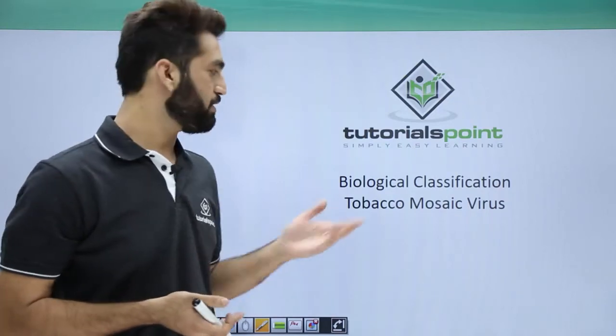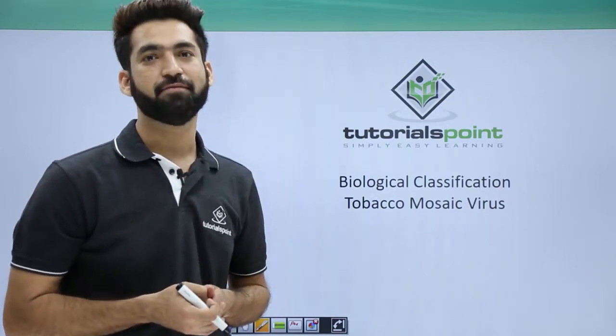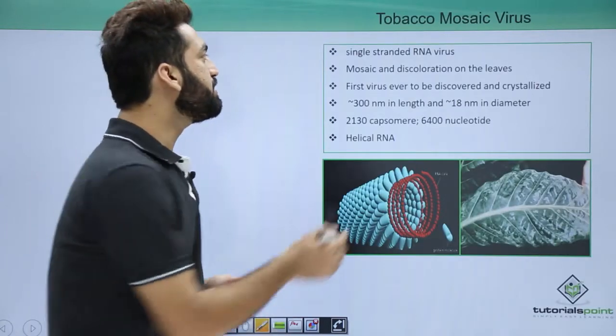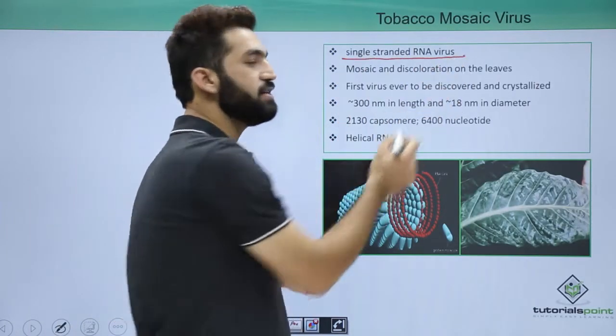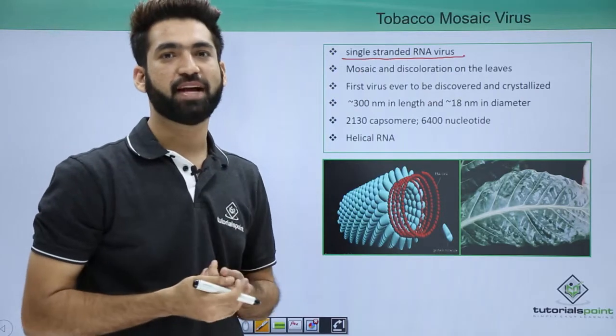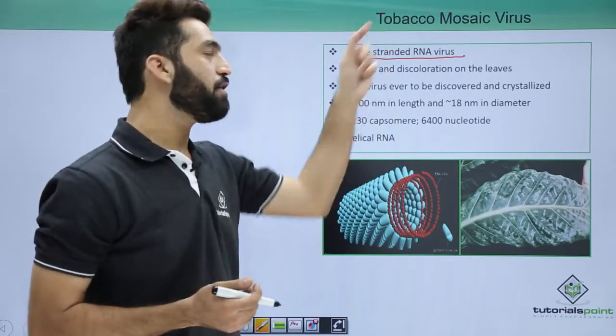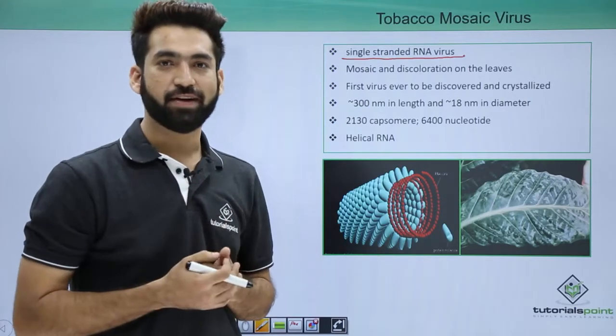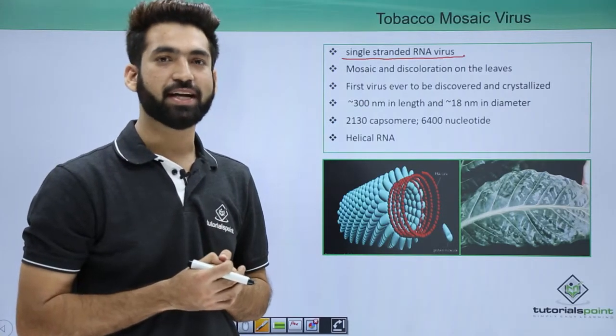In this session we'll be discussing tobacco mosaic virus, TMV. When we talk about TMV virus, this is one among single-stranded RNA viruses. Remember, most of the plant viruses are single-stranded RNA viruses. And we are also talking about one plant, tobacco, where the virus called TMV or tobacco mosaic virus is infecting.